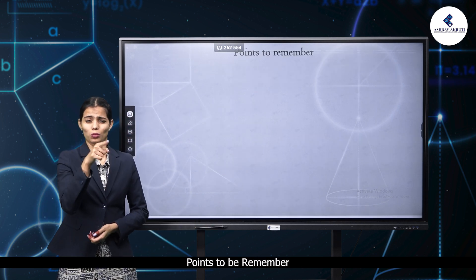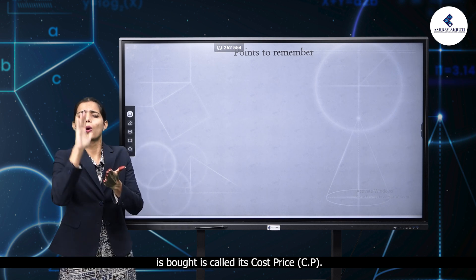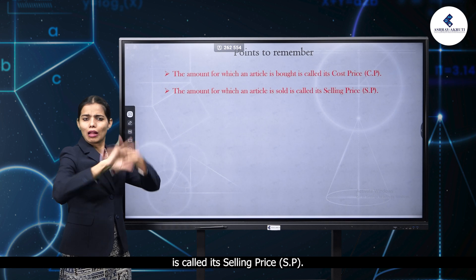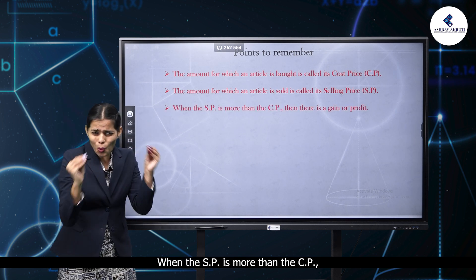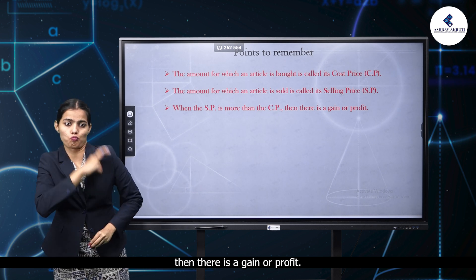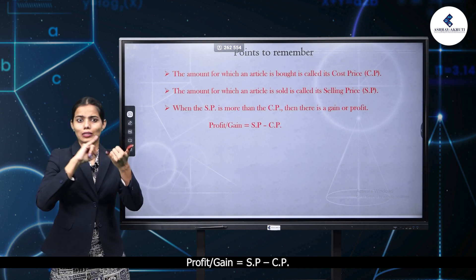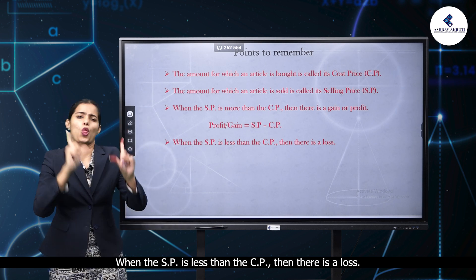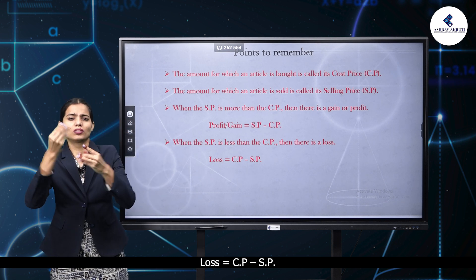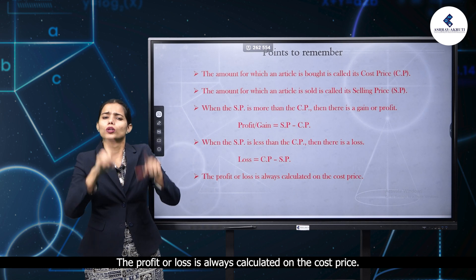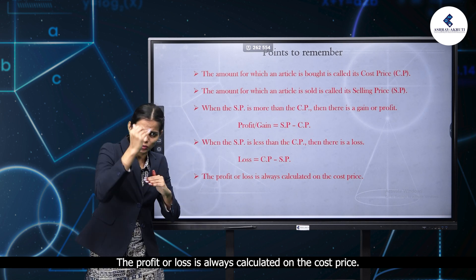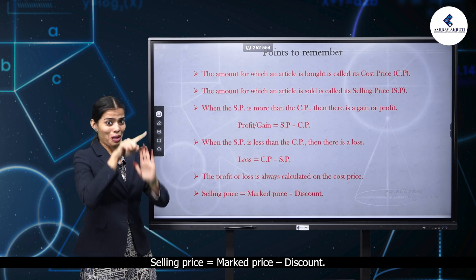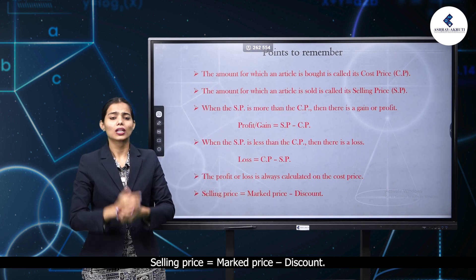Points to remember: the amount for which an article is bought is called its cost price (CP). The amount for which an article is sold is called its selling price (SP). When the SP is more than the CP, there is a gain or profit; profit equals SP minus CP. When the SP is less than the CP, there is a loss; loss equals CP minus SP. The profit or loss is always calculated on the cost price. Selling price equals marked price minus discount. Thanks for watching.